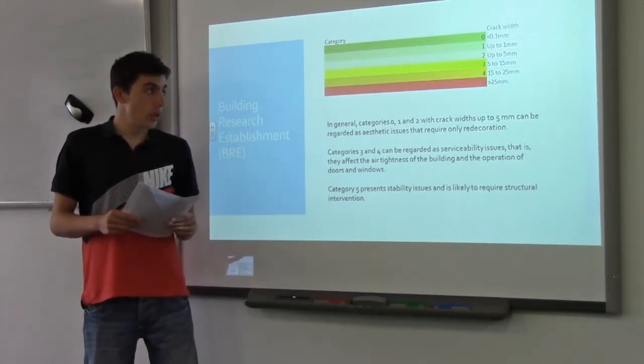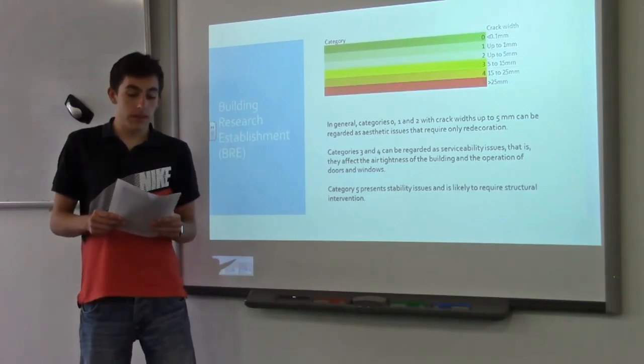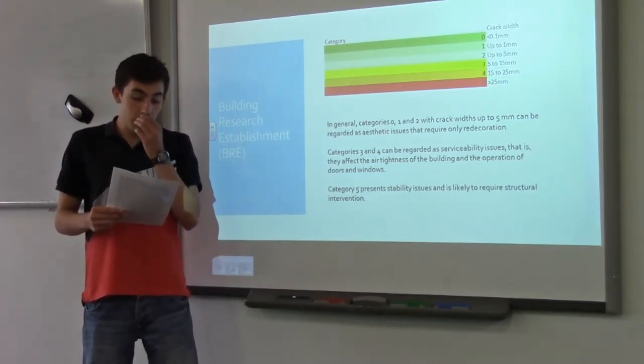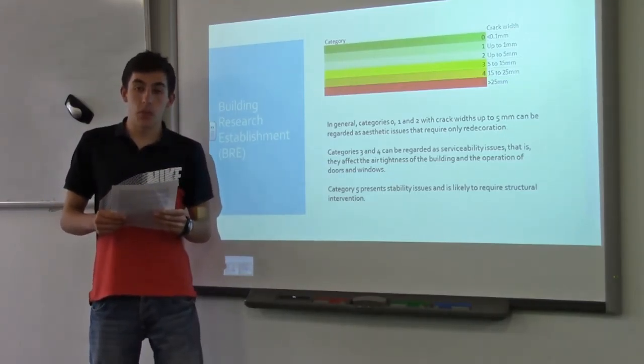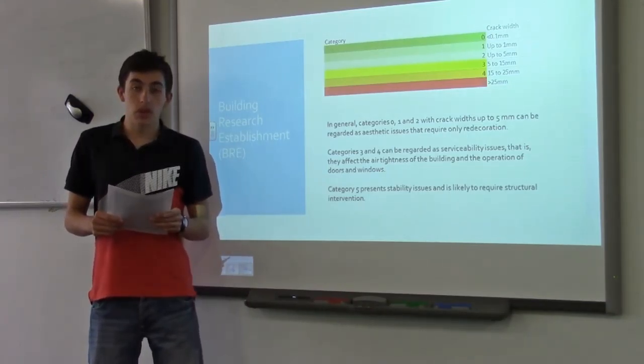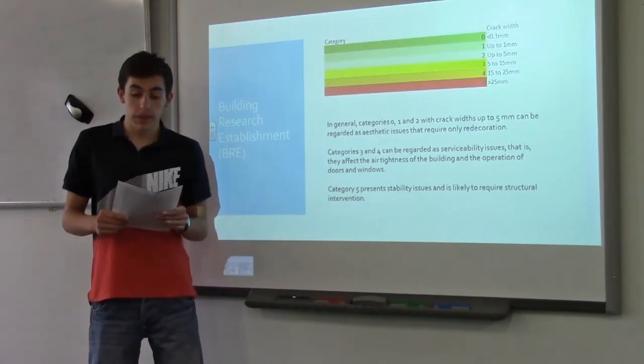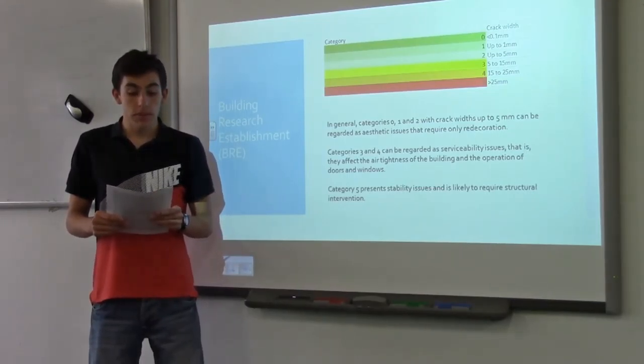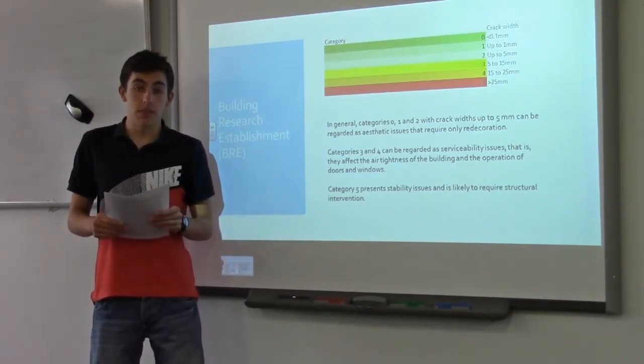Category 4 in which the cracks are larger than 15 millimetres, projected between 15 and 25 millimetres. Structural and extended damage which requires breaking out and replacing sections of walls, especially over doors and windows. Windows and door frames distorted and floors sloping noticeably. Walls leaning or bulging noticeably, some loss of bearing and beams service pipes are disrupted.